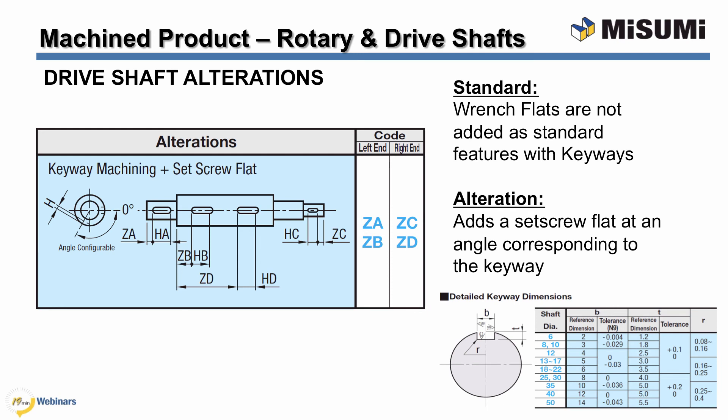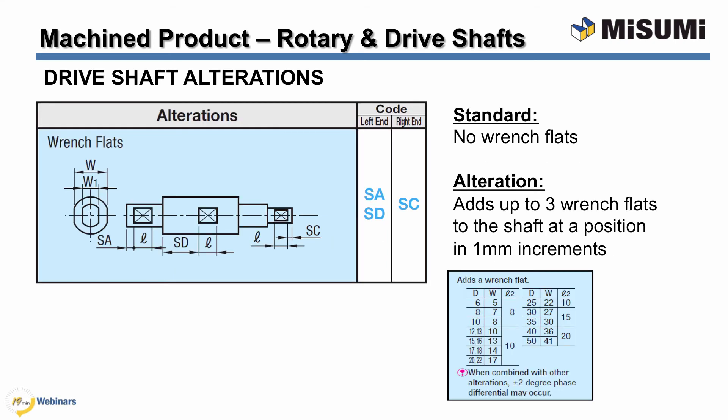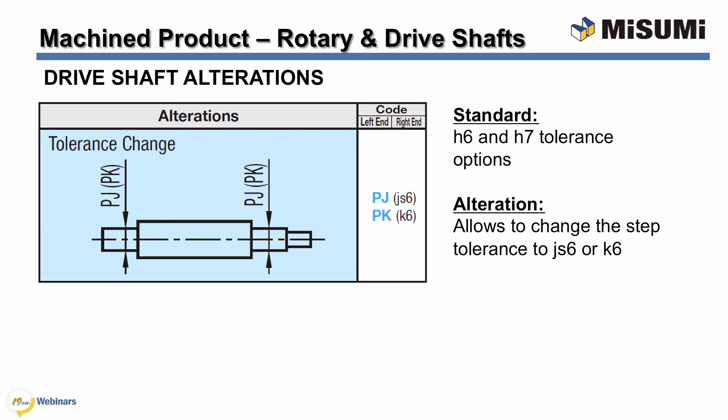If a set screw flat is required in conjunction with the keyway, you can add a set screw flat at the same location as the corresponding keyway but at an angle in 30 degree increments. A set screw flat for all four keyways can be selected. Up to three sets of wrench flats can be added anywhere on the shaft in 1 millimeter increments, following the same dimensional criteria as rotary shafts. Misumi standard drive shafts offer an H6 or H7 tolerance, commonly used in slight clearance or slight push fit. For direct coupled shafts requiring a stronger press fit, you can alter your shaft fit with the appropriate alteration code.